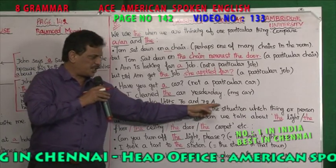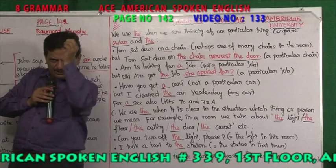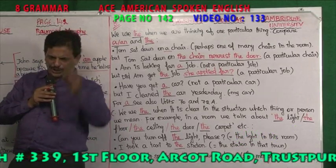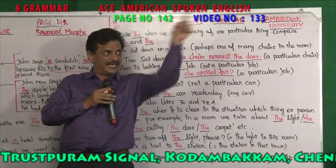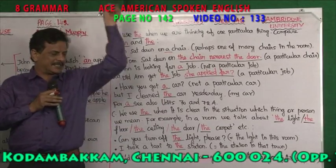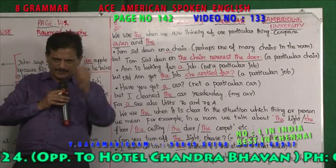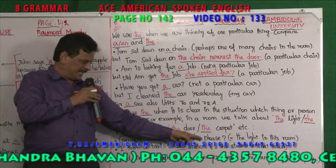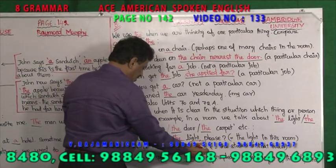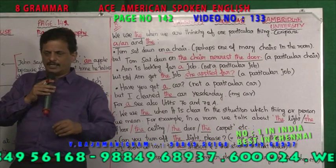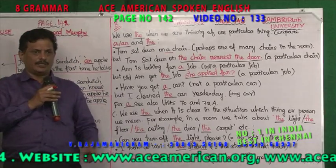We use 'the' when it is clear in the situation which thing or person we mean. When you are very sure and particular about the noun which you want to mention, there you are using 'the'. For example, in a room we talk about the light, the floor, the ceiling, the door, the carpet, etc. Can you turn off the light please? — the light in this room, a particular light. I took a taxi to the station — the station in that town. I would like to speak to the manager please — the particular manager in the shop.